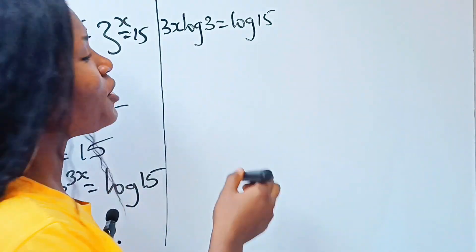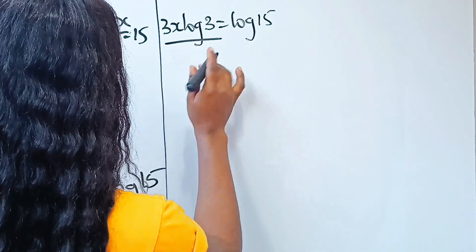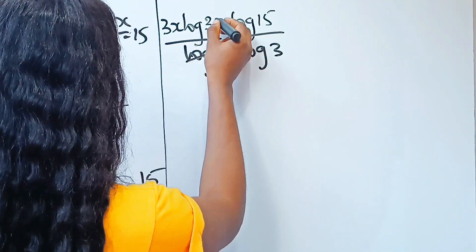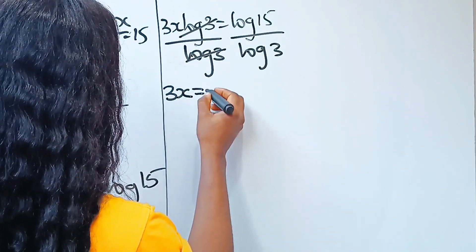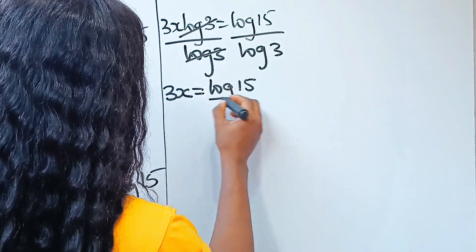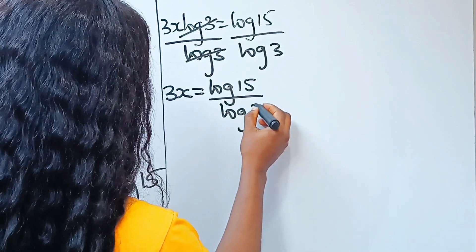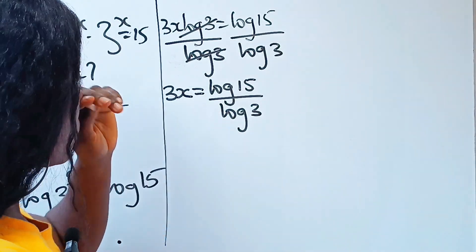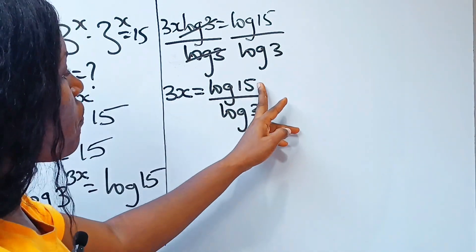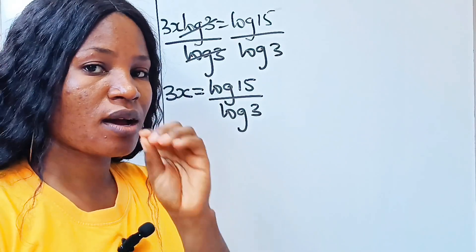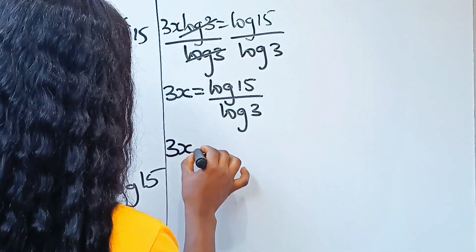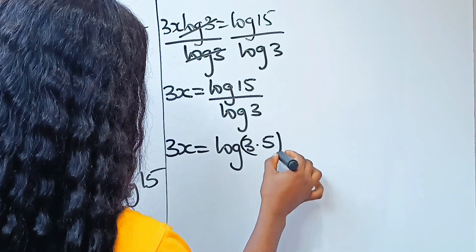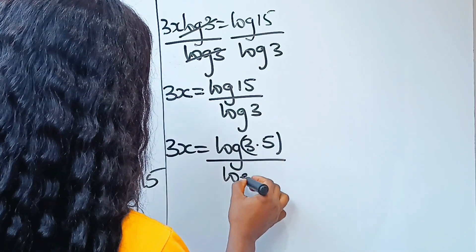So let's divide through by log 3 on both sides. When we do that, we have that 3x is equal to log 15 divided by log 3. Now, log 15 can be expressed as log of 3 times 5. So we have 3x is equal to log (3 multiplied by 5) divided by log 3.